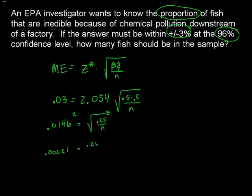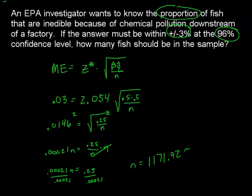And that's going to be equal to 0.25 divided by n. So now I'm going to multiply both sides by n to get that n to cancel out. So I get 0.00021n equals 0.25. And now I'm just going to divide both sides by that really small number that hopefully you stored on your calculator, or else you're going to be way off. So I'm going to get 0.25 divided by the number stored on my calculator. And I get my sample size of approximately 1171.92, so I'm going to round that to 1,172. 1,172 fish will give me that very small margin of error of 3% at 96% confidence level.